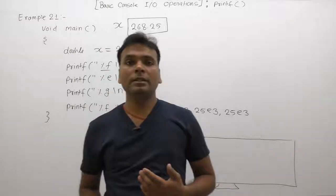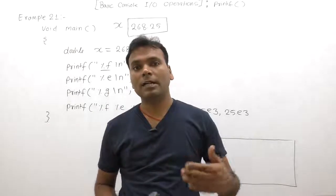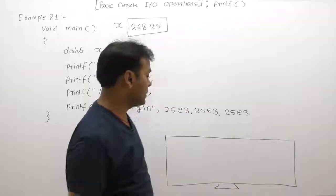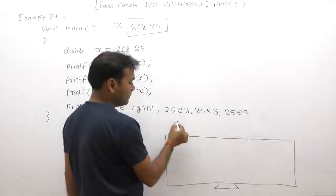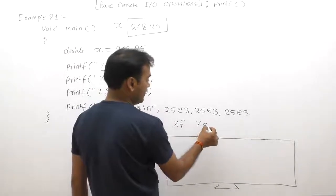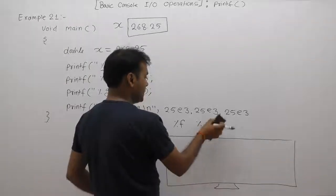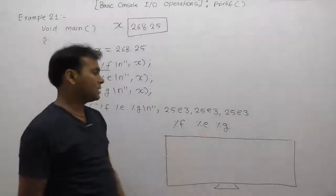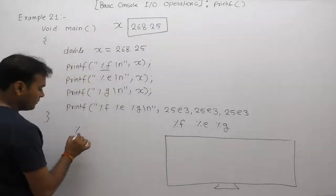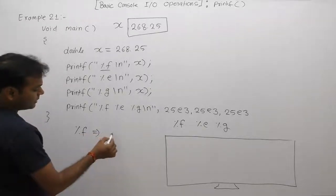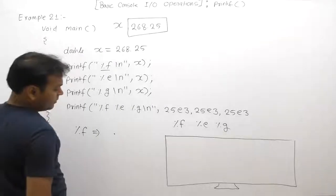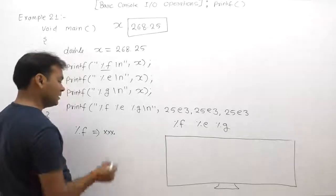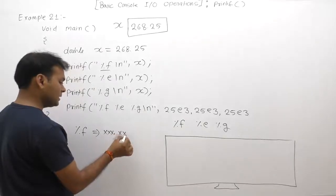Just as integer numbers can be displayed using different format specifiers, floating point numbers can also be displayed in different representations. Three format specifiers are available for floating point numbers: %f, %e, and %g. With %f, the default precision is six digits after the decimal point.